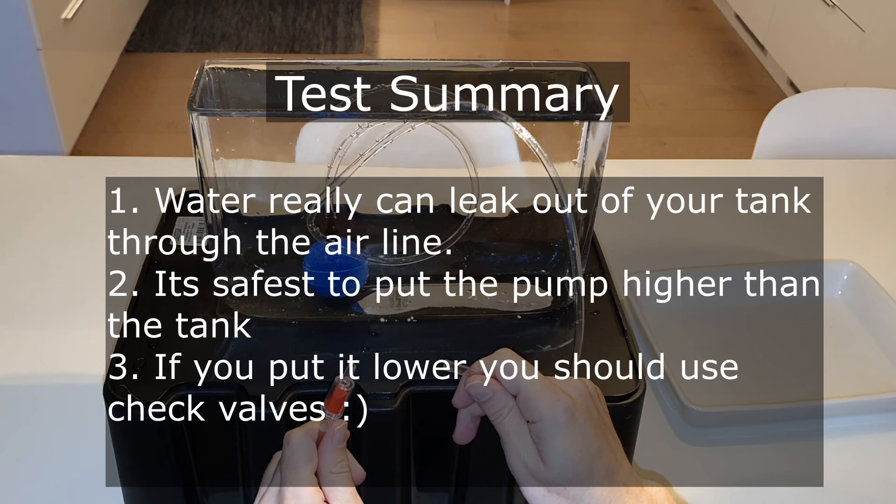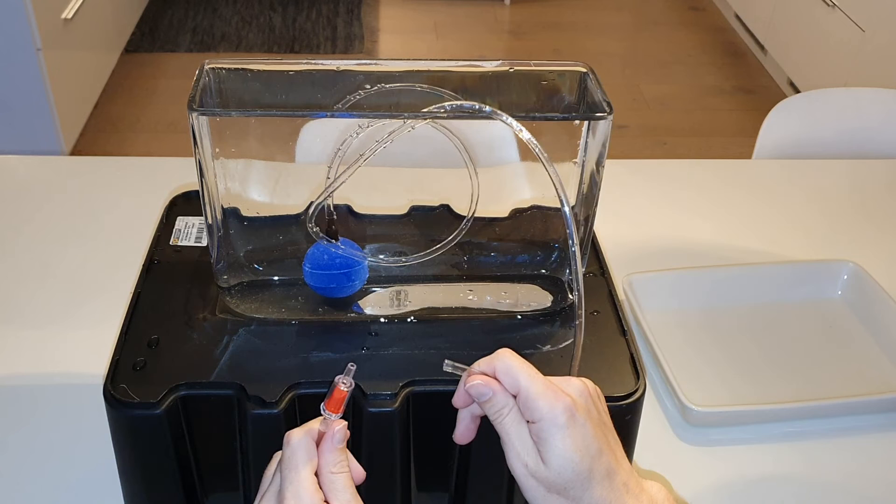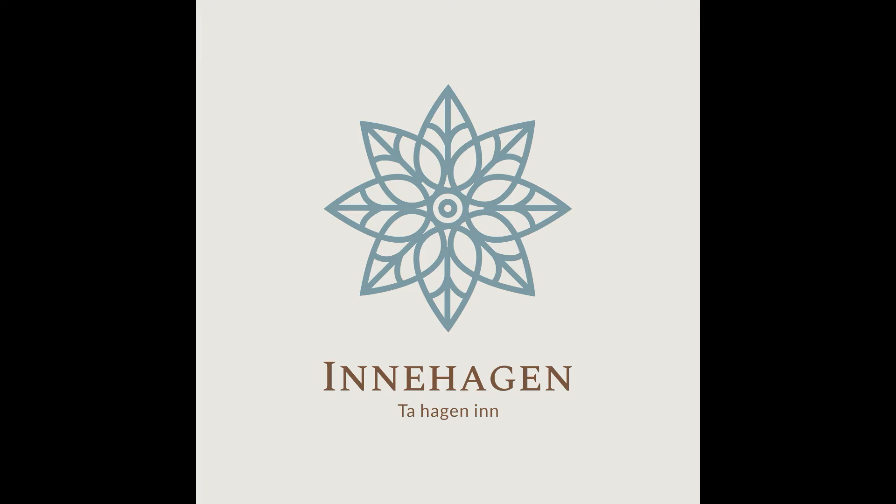To sum it up: water really can leak out of your tank through the airline, even though it's not very likely to happen. It is safest to put the pump higher than the tank. But if you have to put it lower, you really should use check valves.